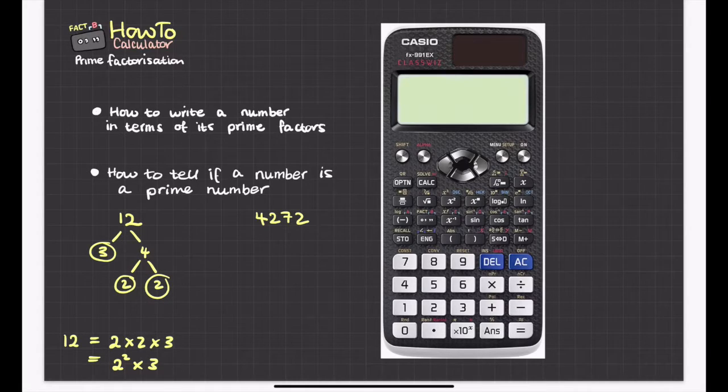So what I want you to do is turn on your calculator. And we're going to type in this number. So 4,000. So 4, 2, 7, and then 2. And then press equals. And it will just say 4,272.